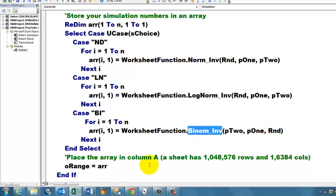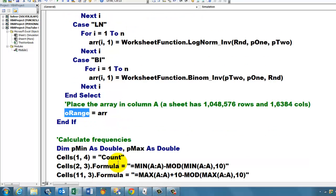Then we place the array in column A. The sheet has one million rows—that is why we set the max to a million. oRange equals arr. That is the shortest one you could ever dream of. Why is that so easy and so well possible? Because Excel is basically also a two-dimensional array, so we are storing the array in the array of the spreadsheet in that range.